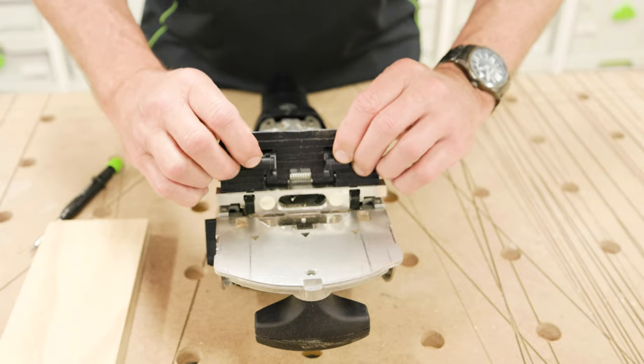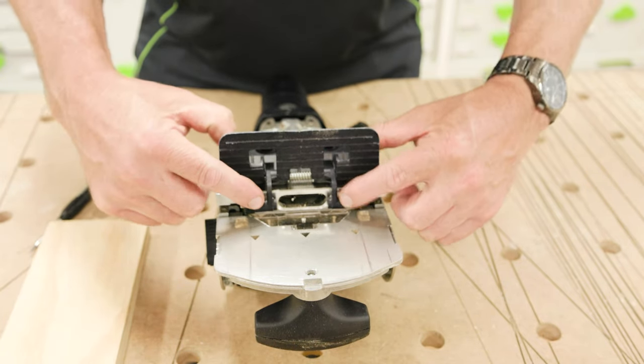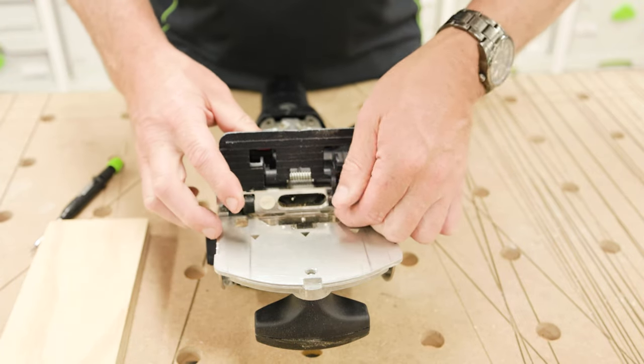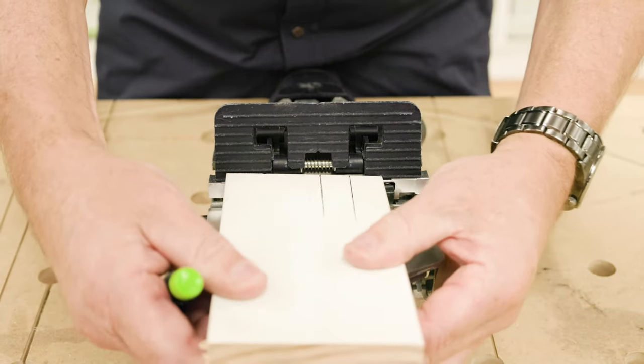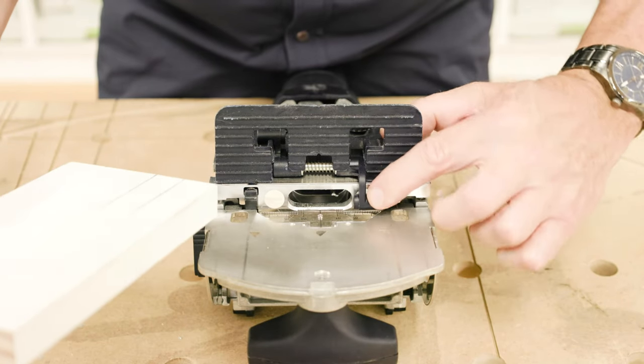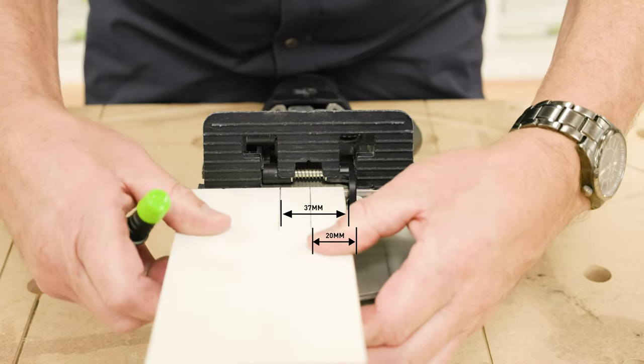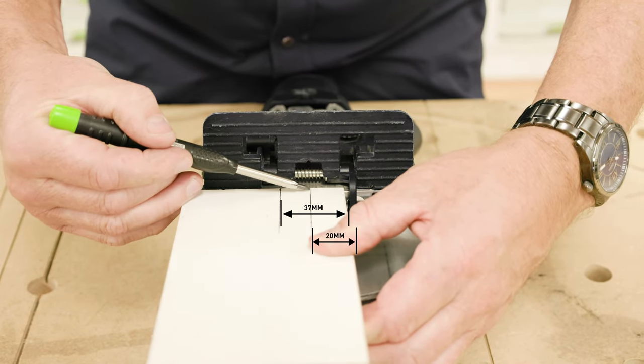The base support bracket includes integrated index stops, providing accurate reference points for mortising near the edge of a workpiece. This feature is particularly useful for narrow workpieces. When using the flip stops, the centre of the cut is 20mm from the edge versus 37mm without.